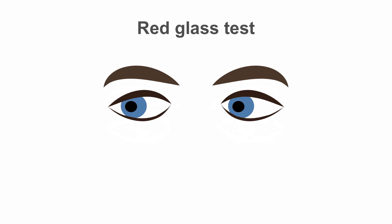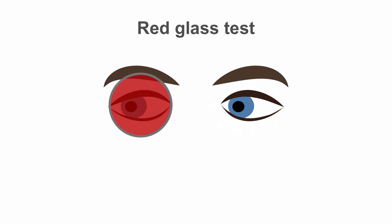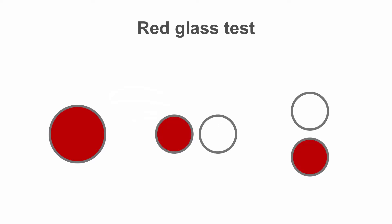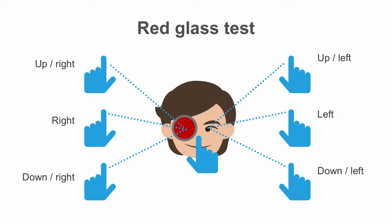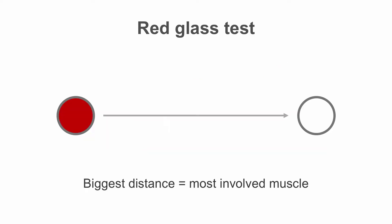More advanced testing can be done at the bedside. The red glass test involves putting a red glass in front of one eye — by convention the right eye. Shine a light a few inches from the nose and ask if the red light is all that is seen, or if there is separation either horizontally or vertically. Move through all nine fields of gaze asking the same thing, and ask which position produces the greatest degree of separation — this indicates the muscle most involved.